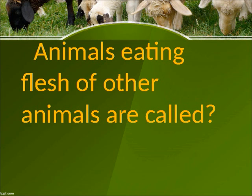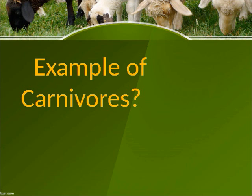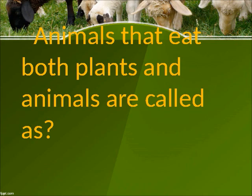Animals eating flesh of other animals are called carnivores. Examples of carnivores: lion, tiger, cheetah, wolves, and snakes. Animals that eat both plants and animals are called omnivores.